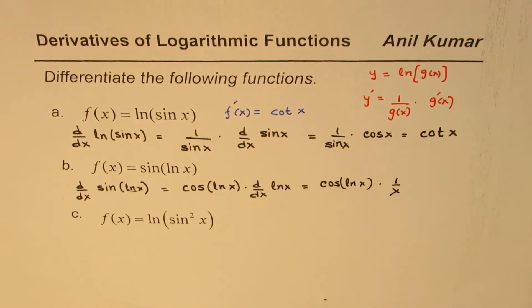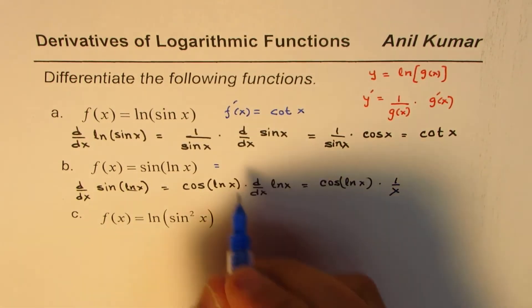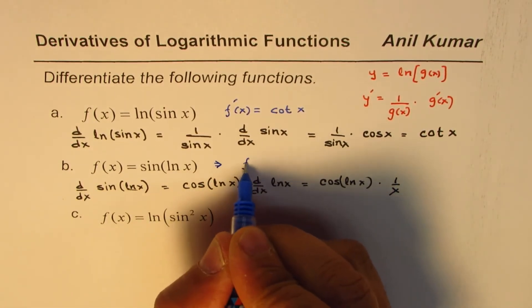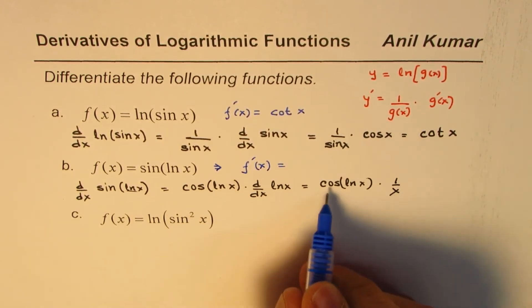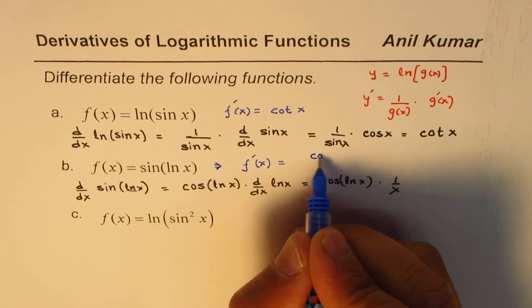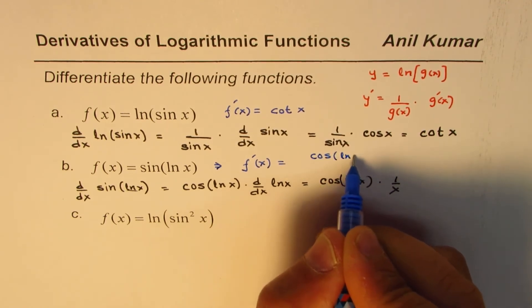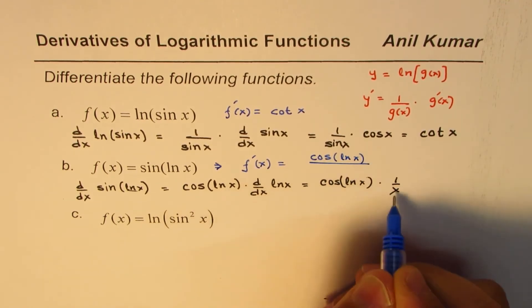So the answer for the second one is going to be, that will give you derivative as equal to cos ln x divided by x.